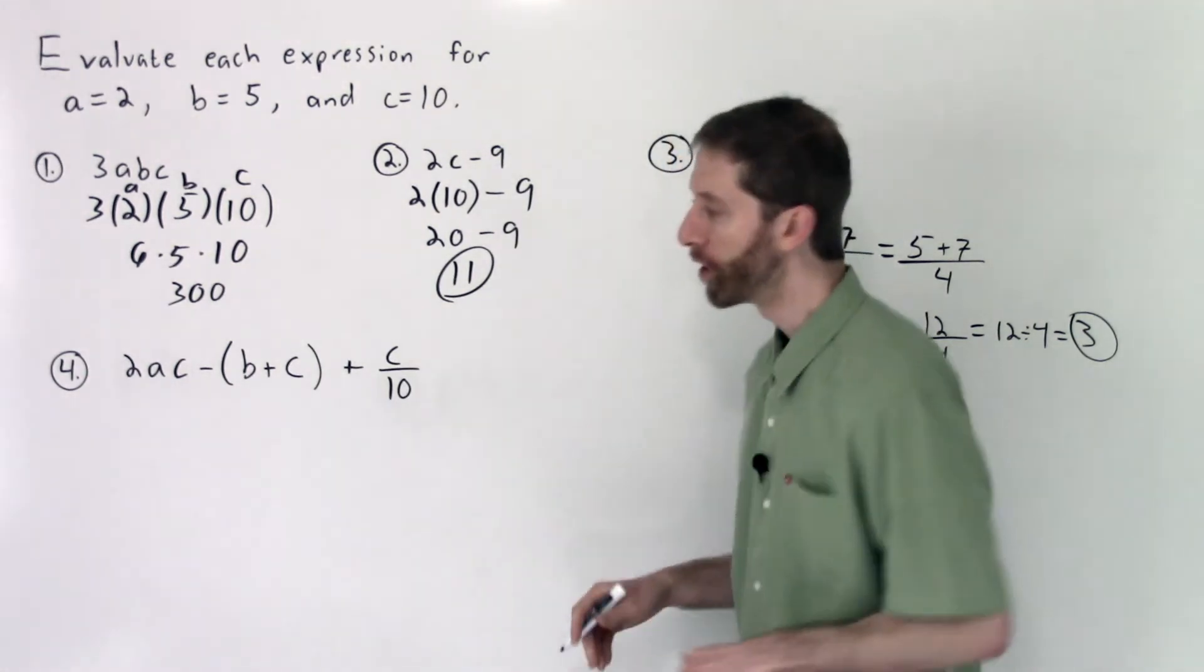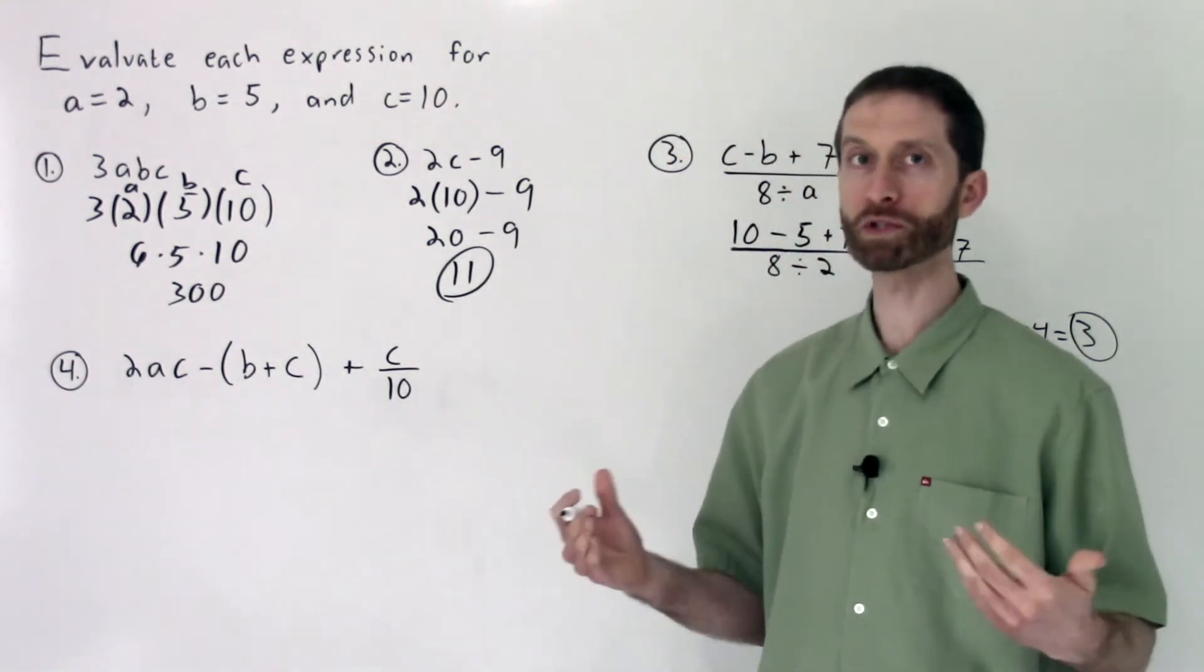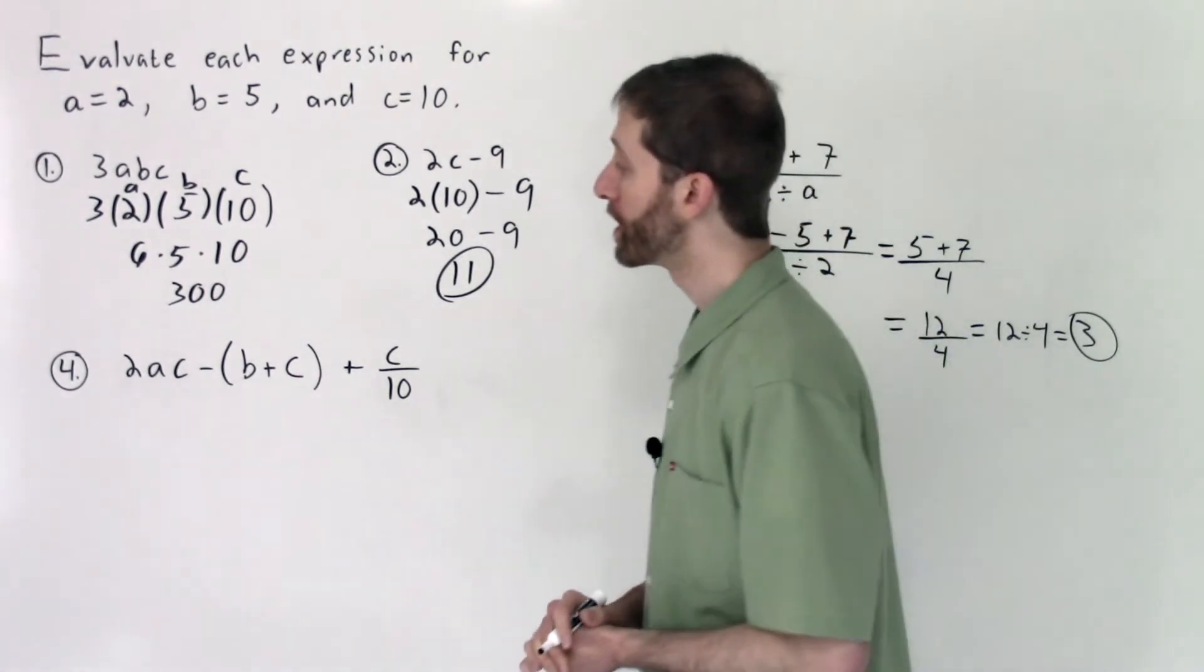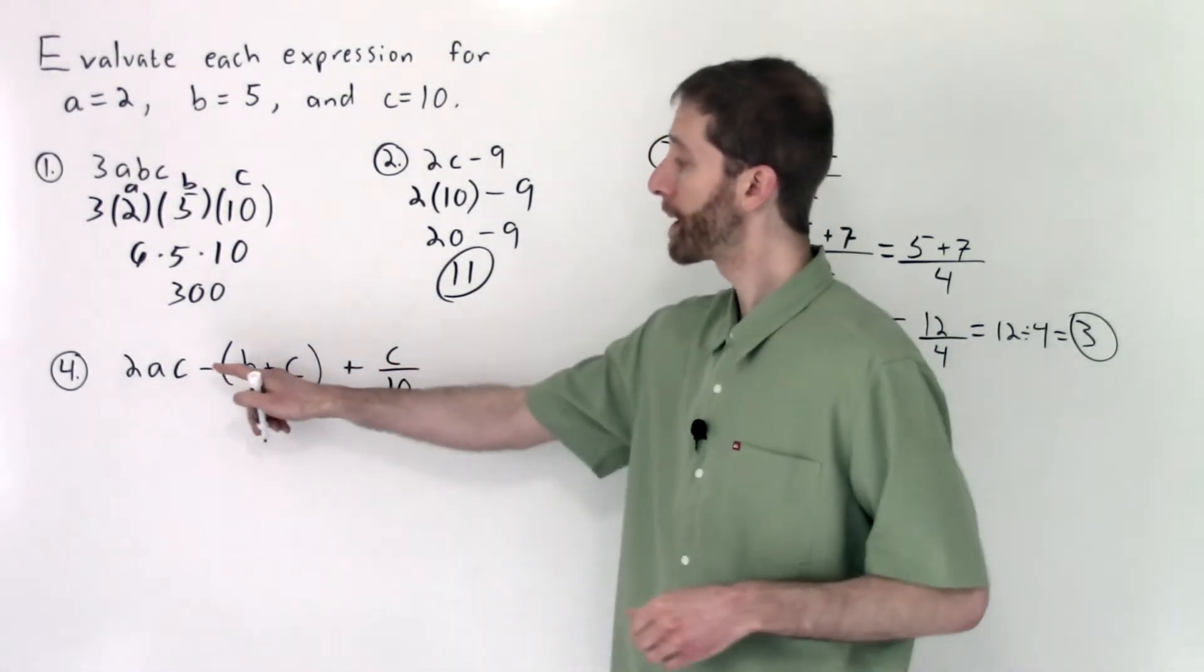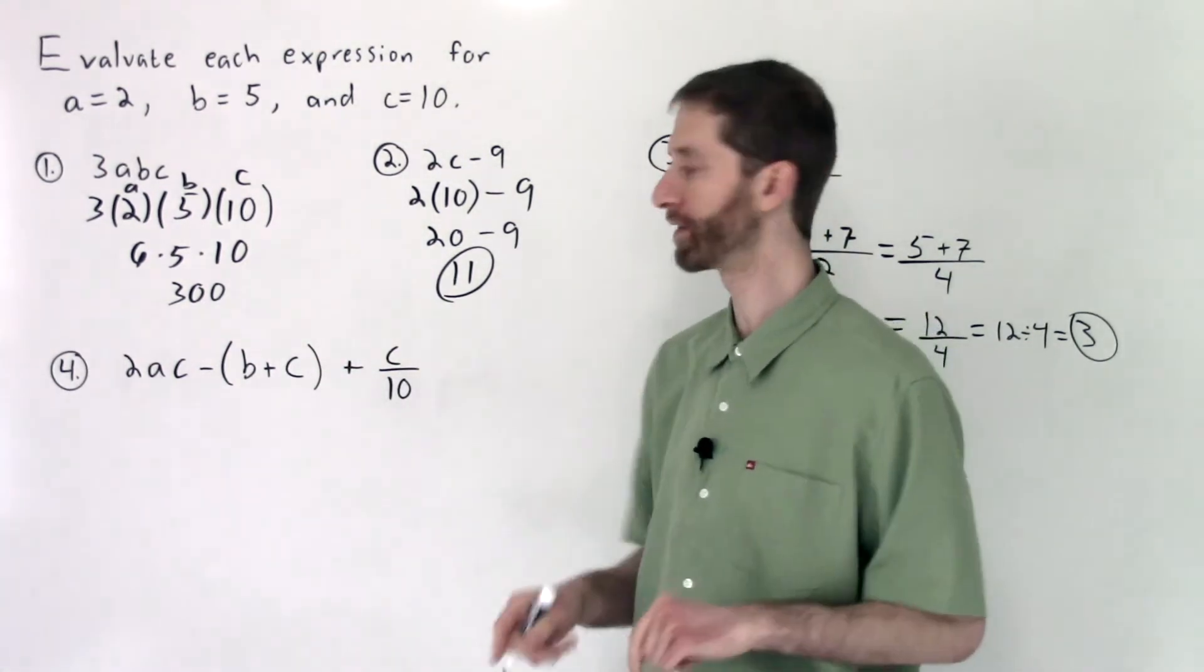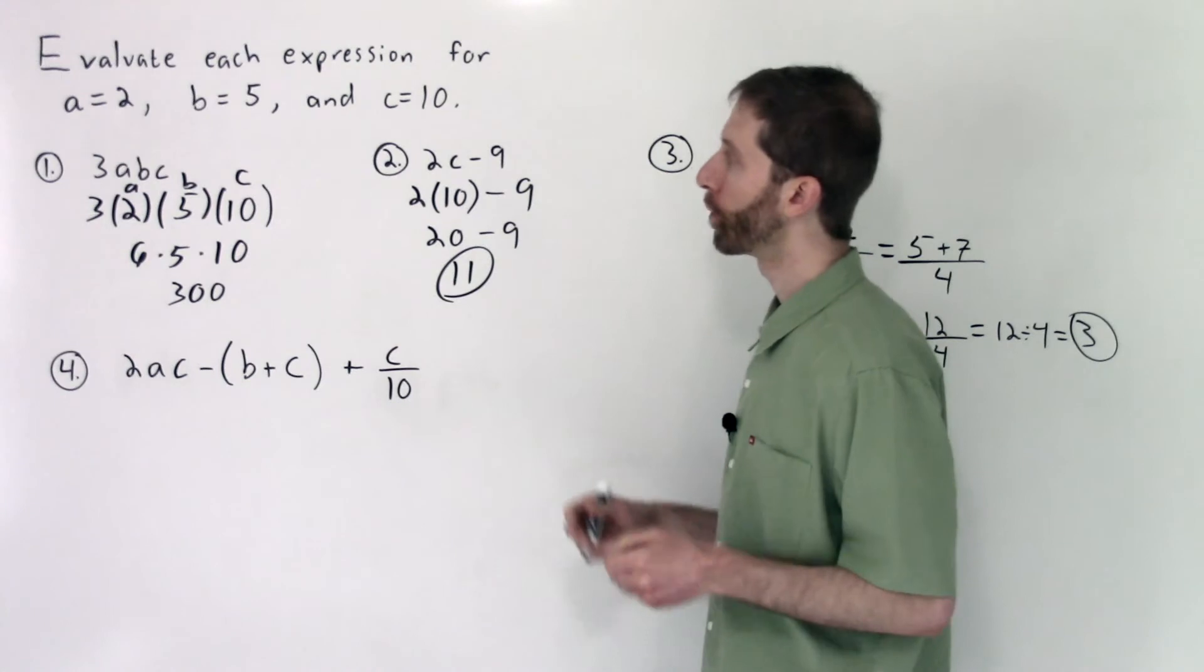Here we go with one final problem. Multiple steps. It's just one big mess made up of lots of simple parts. We've got 2 times A times C minus the quantity B plus C, the quantity, plus C over 10.